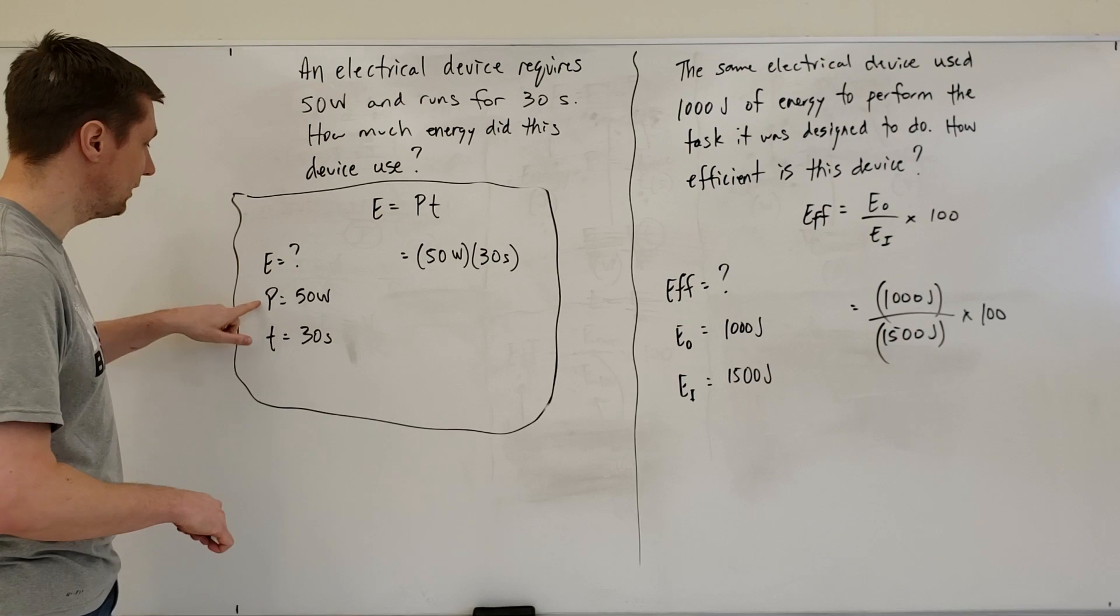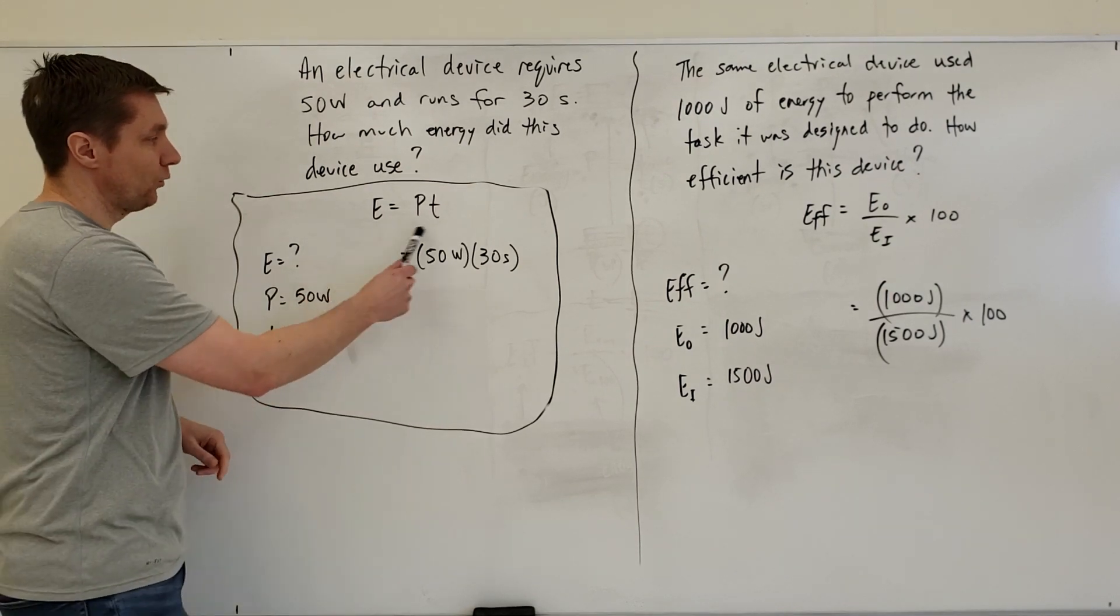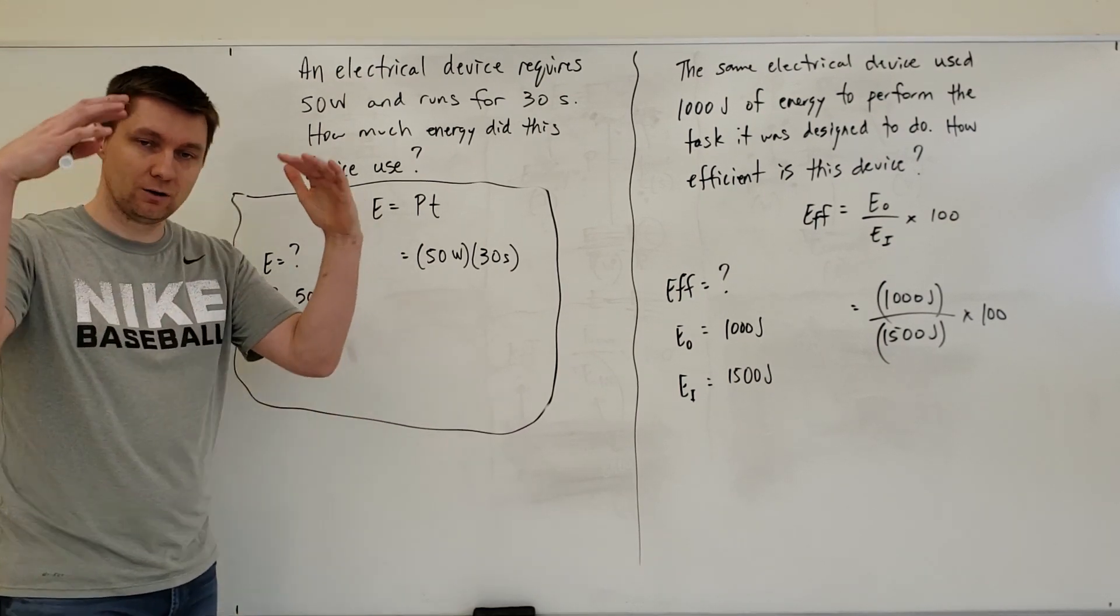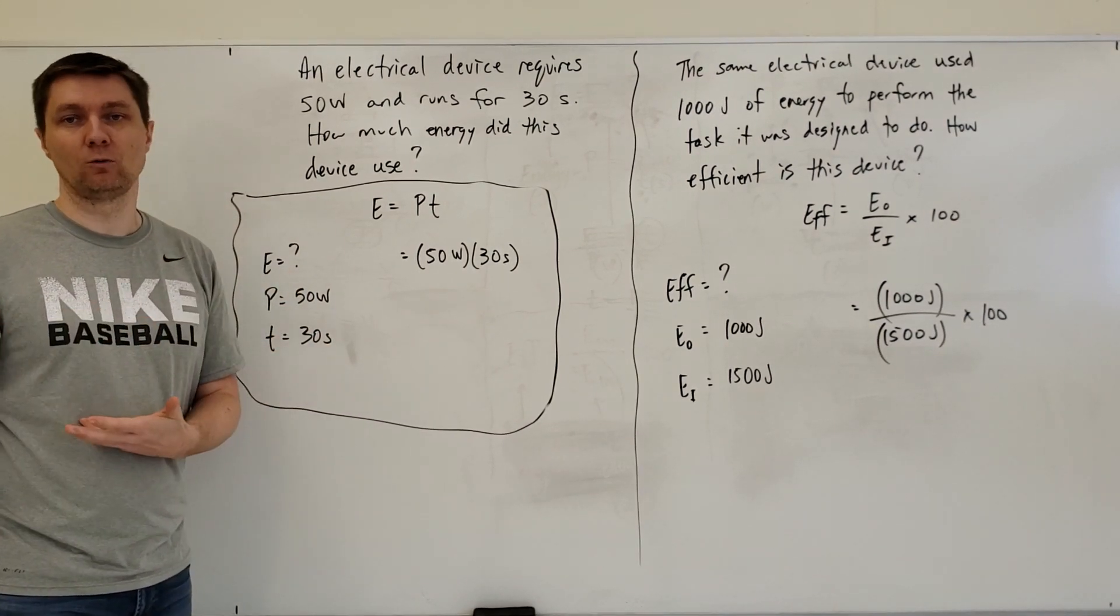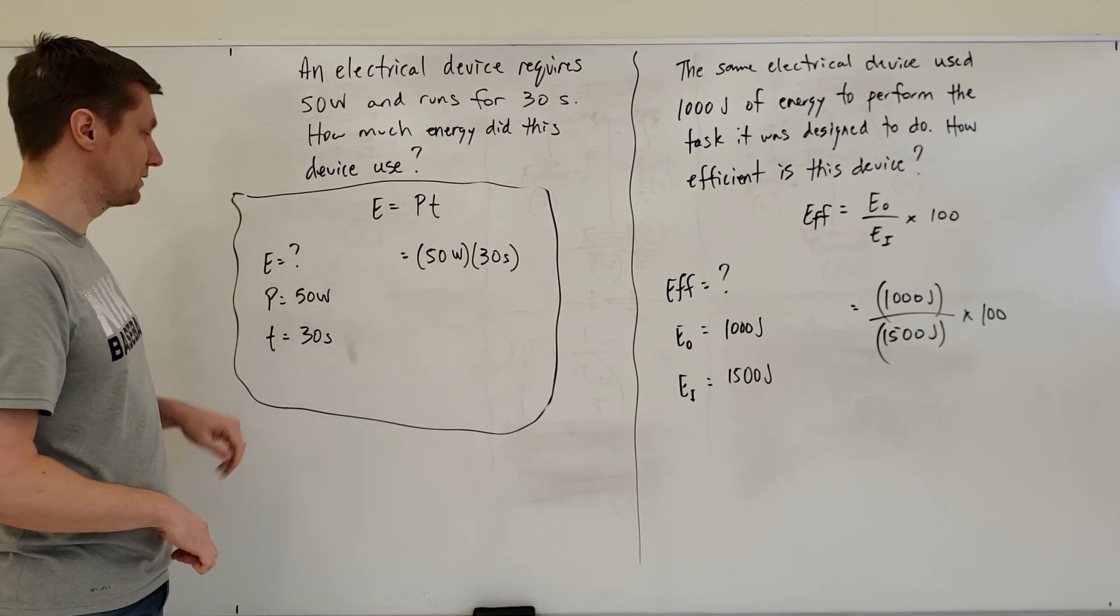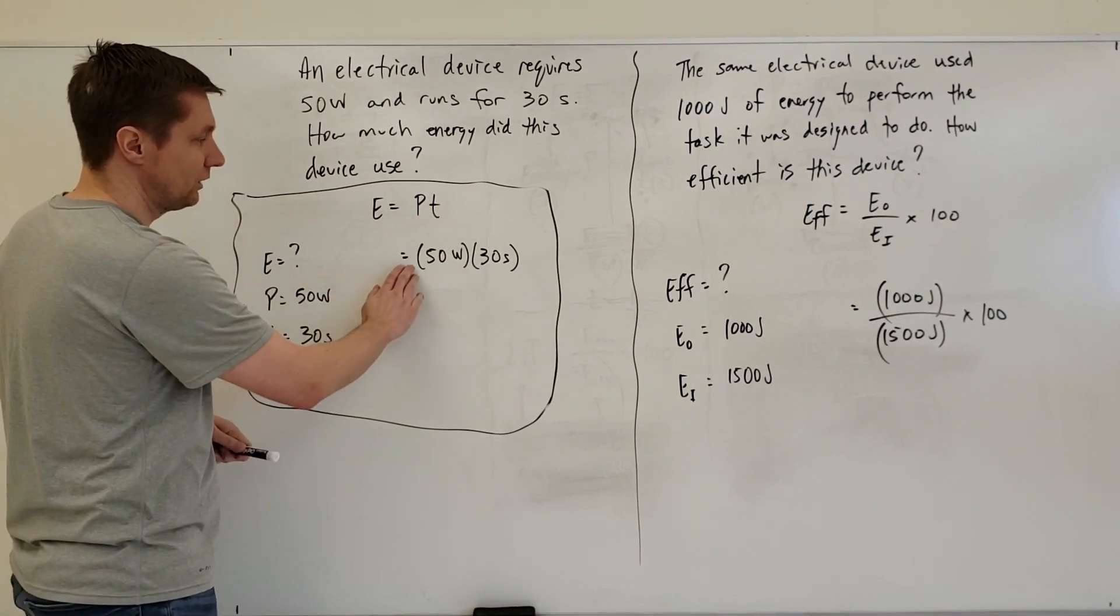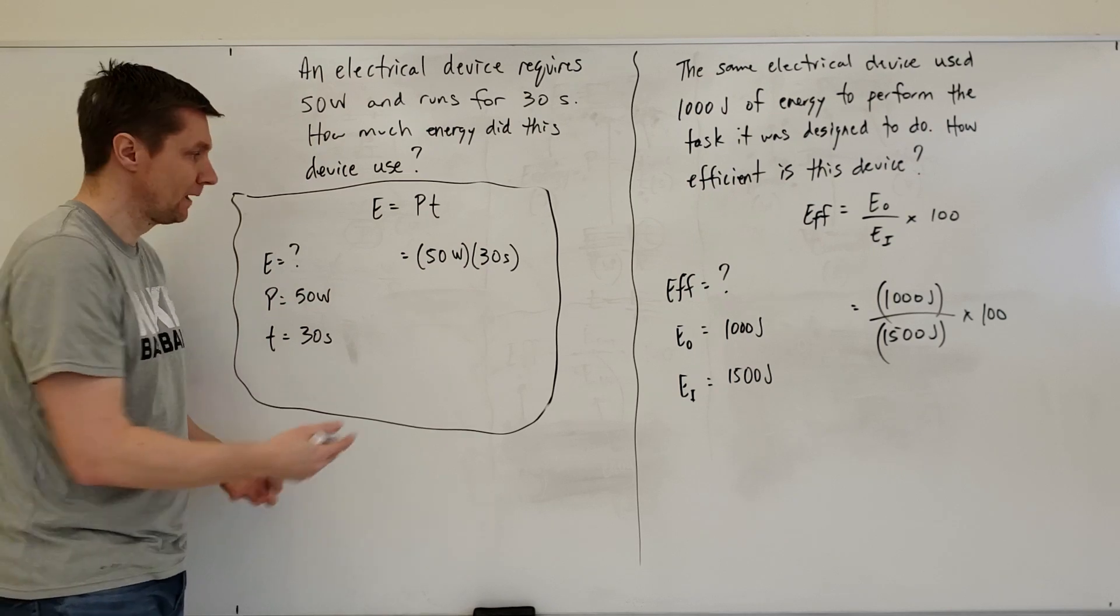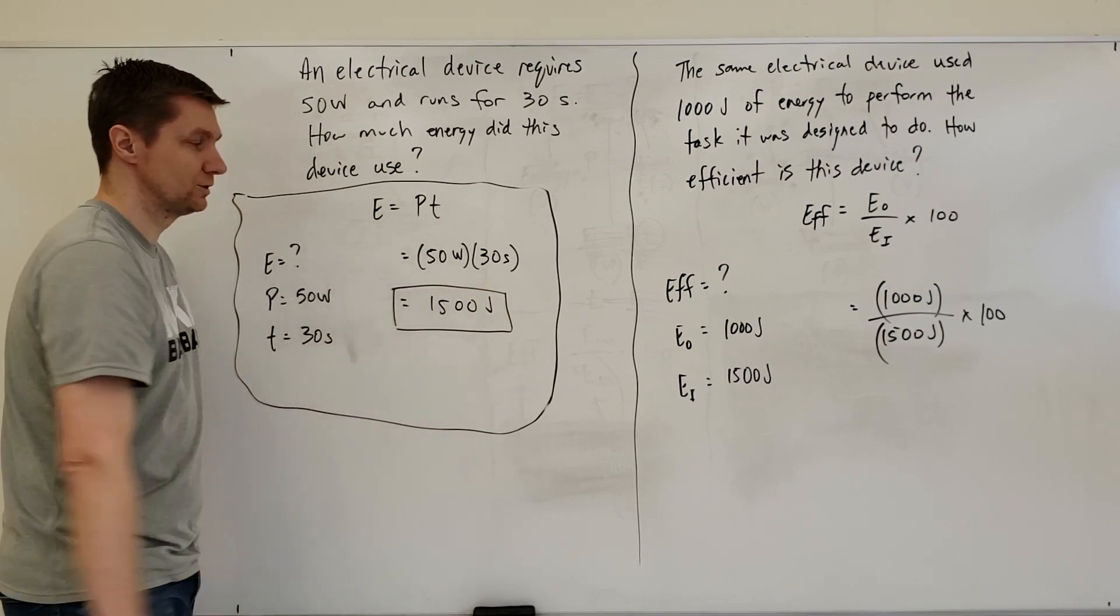Then I write out the formula I need to use for this question. I would go to my formula sheet and look at the formulas I need to choose from. Given the information in the question, what formula would I choose? Obviously the formula that has the parameters given in the question. Energy equals power times time - I would use this formula to calculate energy. After I write out the formula, I plug in the numbers: 50 watts for P, 30 seconds for T. Plug this into my calculator and I get 1500 joules. That's my answer.